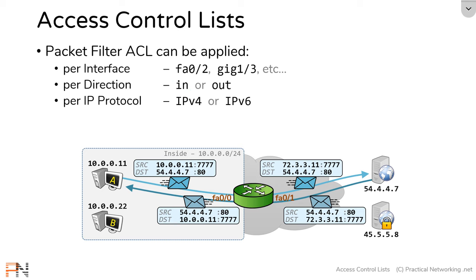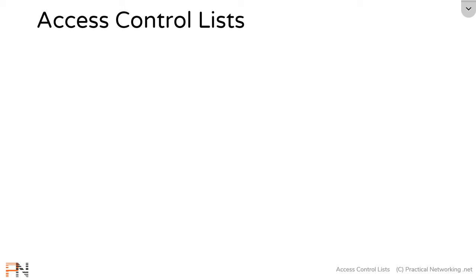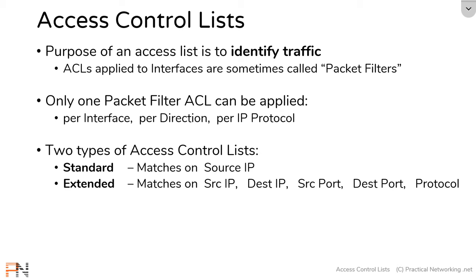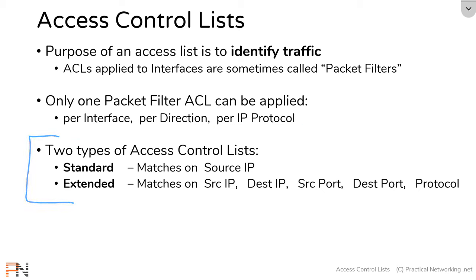I'll be looking at the application of access lists to router interfaces in more detail in a later video in this series. For now, the key takeaways are: an access list is simply there to identify traffic, and how you apply it determines what it does. An access list applied to an interface is sometimes called a packet filter, and you can only apply an ACL once per interface, per direction, and per protocol. The two types of access lists differ in the fields they use to match traffic — a standard access list only matches on the source IP address, while an extended access list matches on source IP, destination IP, source port, destination port, and protocol.